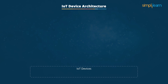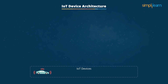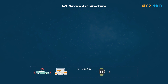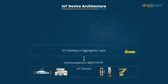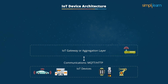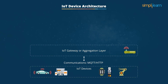IoT Device Architecture. There are four layers in the device architecture. The base layer consists of IoT devices, including all the components like sensors, with the ability to sense, compute, and connect to other devices. The second layer is the IoT gateway or aggregation layer, which significantly aggregates data from various sensors.